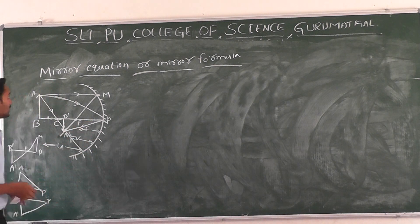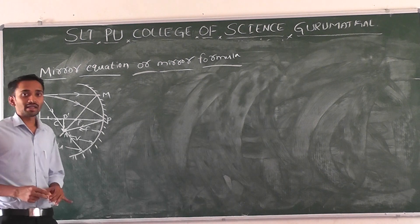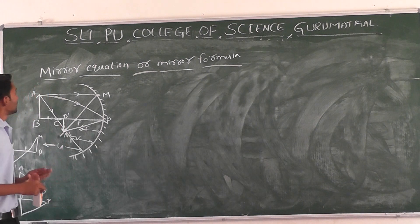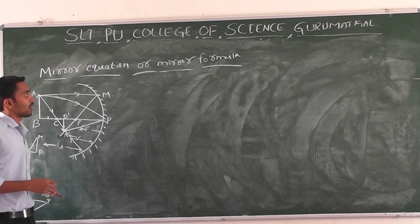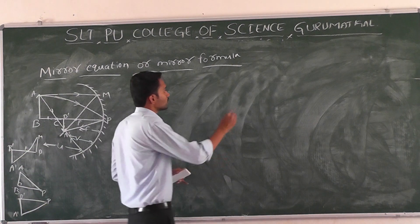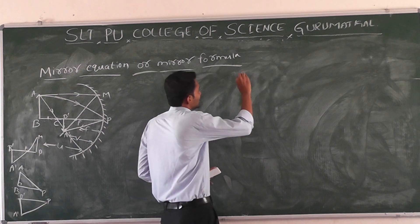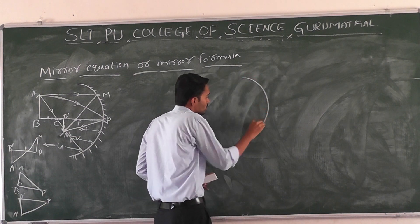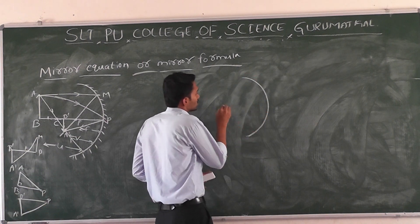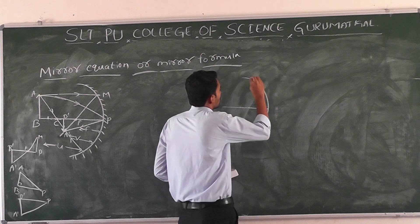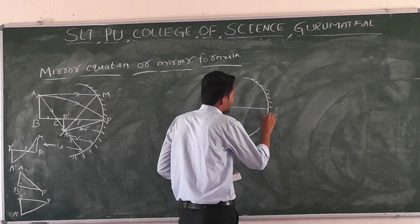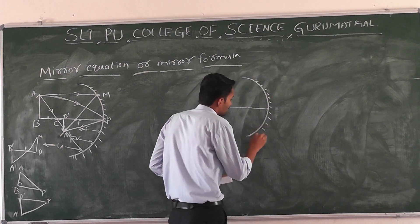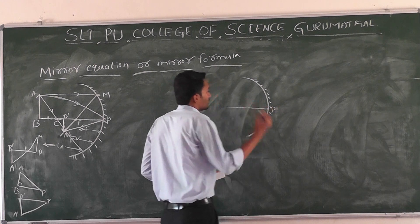In this class we are deriving the mirror equation or mirror formula. Before starting this derivation, we have to know a few concepts — specifically where the light rays are incident and where they are deflecting.